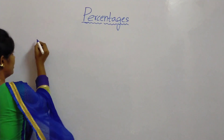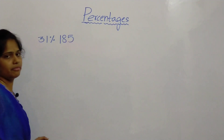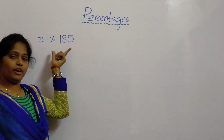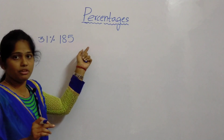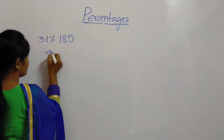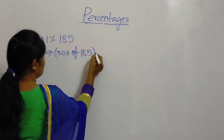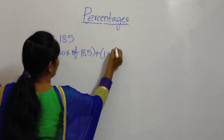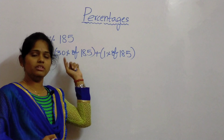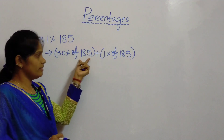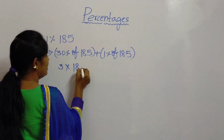The next example is 31 percentage of 185. Here also, as we did with 45 percentage splitting it as 40 plus 5, we have to do 30 percentage of 185 plus 1 percentage of 185. So 30 percentage we will take as 3 into 10 percentage. So 10 percentage of 185 will be 3 into 18.5.